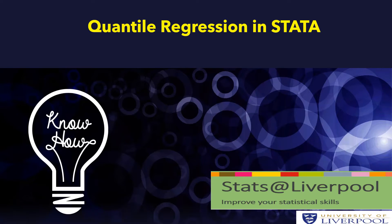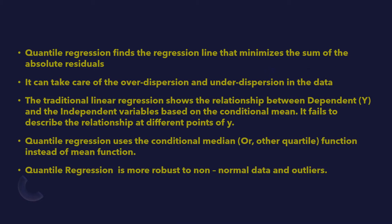Quantile regression using the software Stata. Quantile regression finds the regression line that minimizes the sum of the absolute residuals. It can take care of over dispersion and under dispersion in the data. Traditional linear regression shows the relationship between dependent and independent variables based on the conditional mean. However, it fails to describe the relationship at different points of the dependent variable. Quantile regression uses the conditional median or other quantile function instead of the mean function, and therefore is more robust to non-normal data and outliers.